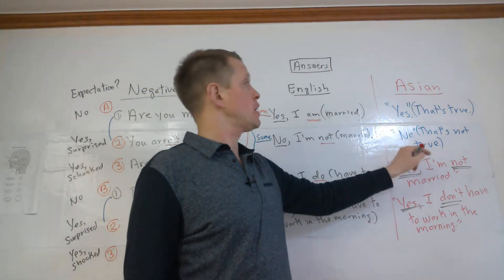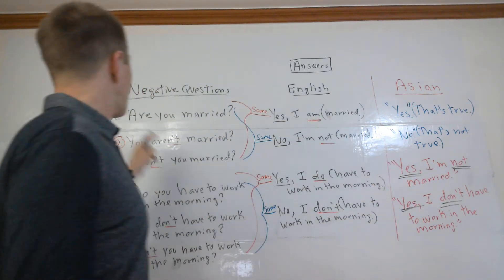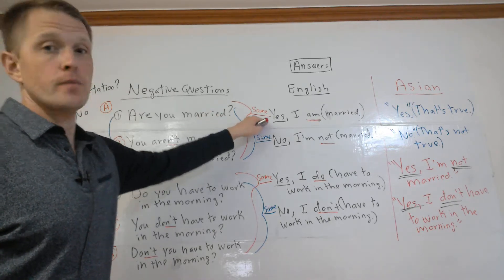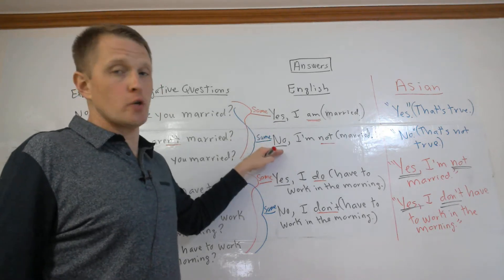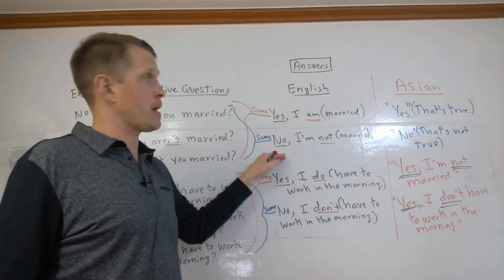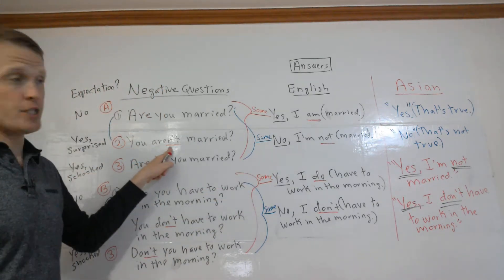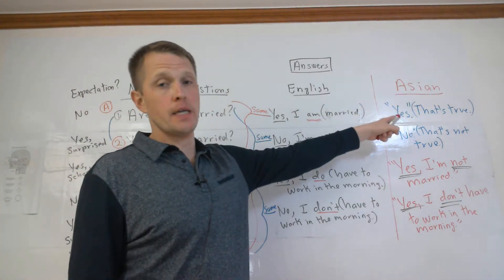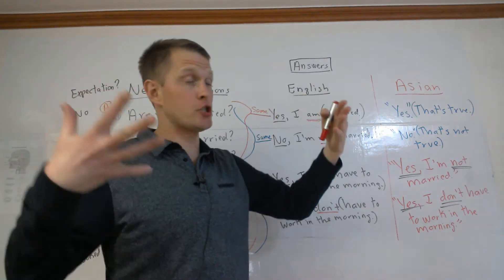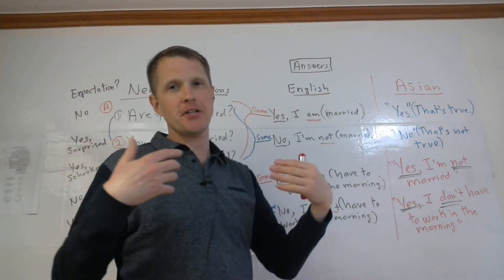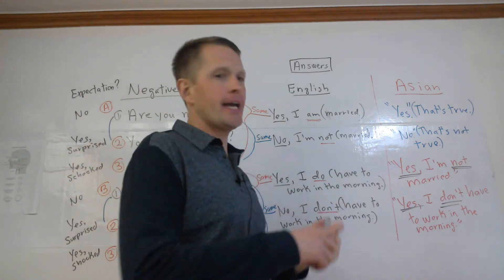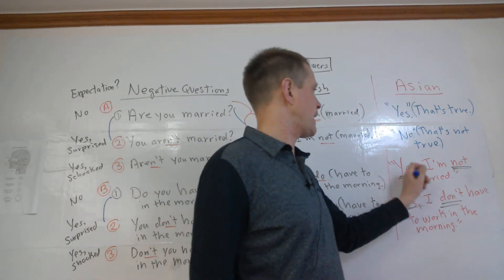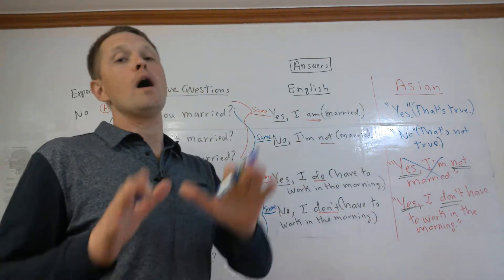In some Asian languages, you answer based on whether the statement is true or not — 'yes, that's true' or 'no, that's not true.' There's no problem with the positive question: 'Are you married?' — yes, that's true equals yes I am, or no, that's not true equals no I'm not. But with negative questions, an Asian speaker answering 'You aren't married?' with 'yes' — thinking 'yes, that's true, I'm not married' — is actually telling the English speaker 'yes, I am married.' You can't combine yes and not: 'yes I'm not' doesn't work. It's either 'no, I'm not' or 'yes, I am.'